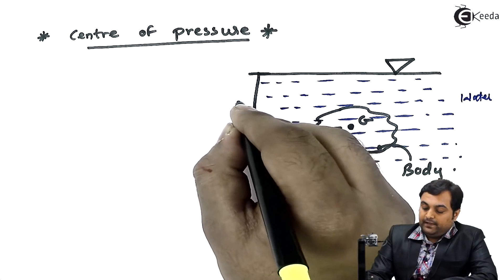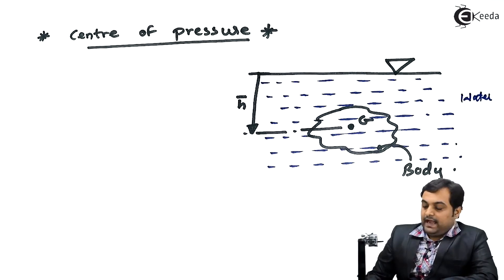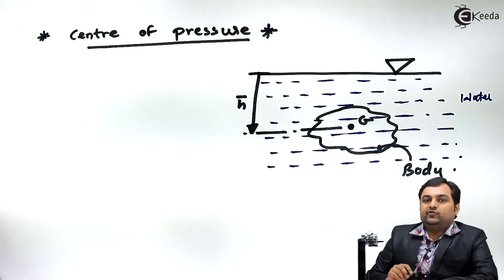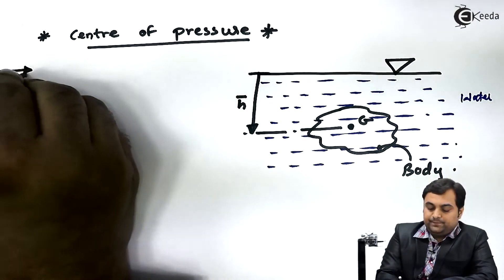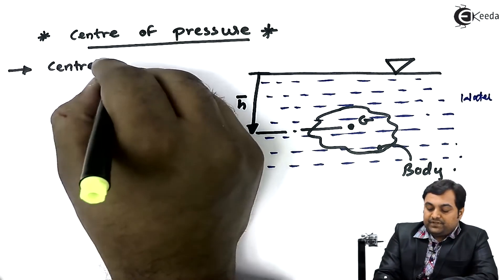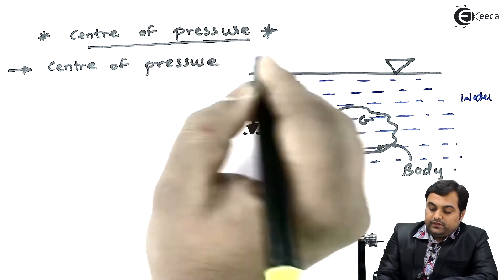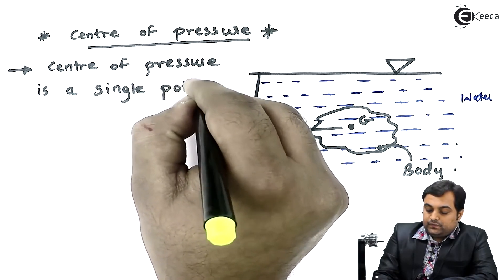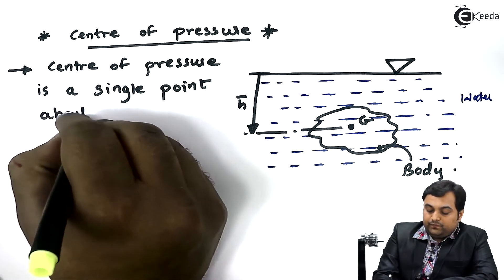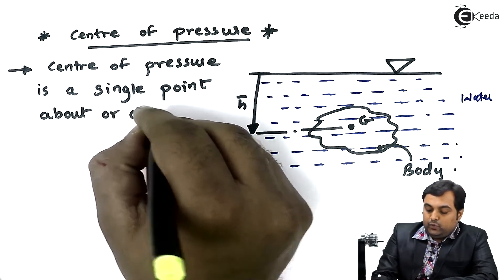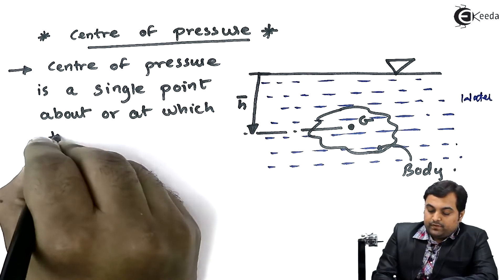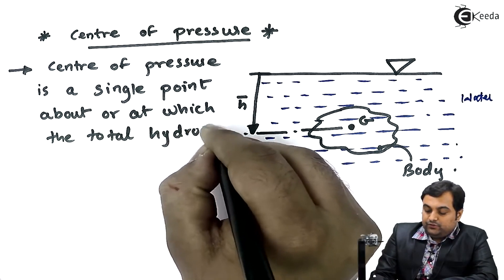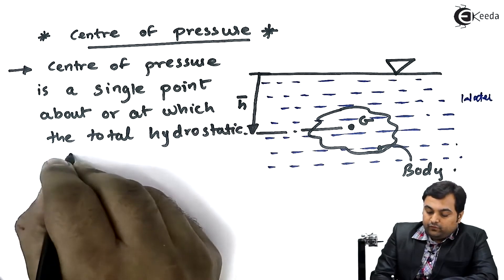And now center of pressure is that point where the total hydrostatic force acts. I'll write down the definition. Center of pressure is a single point about or at which the total hydrostatic force acts.